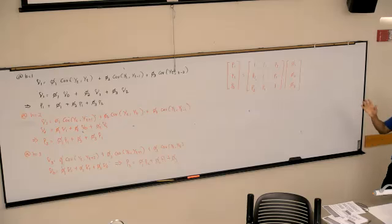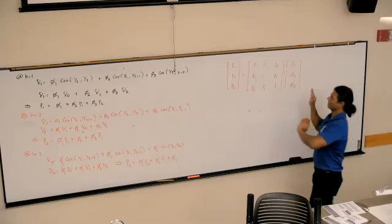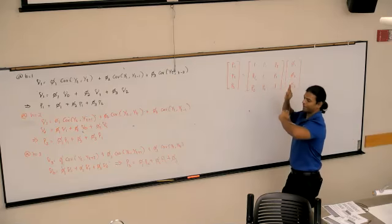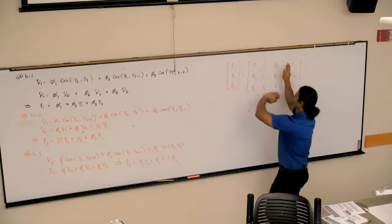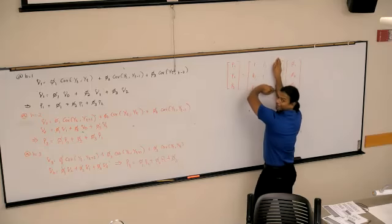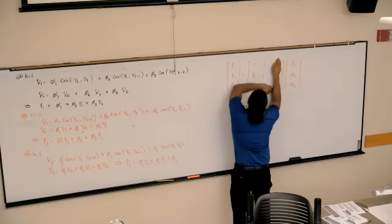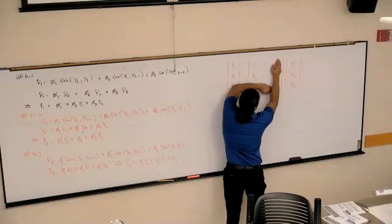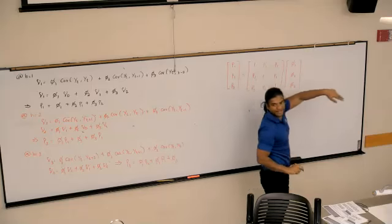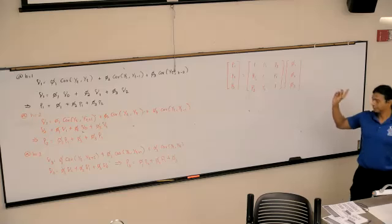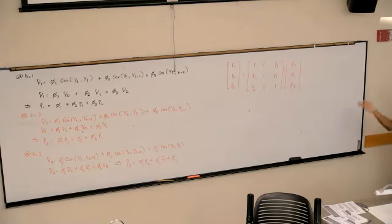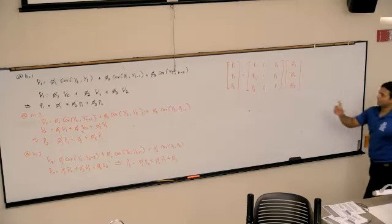And you should sort of see a pattern here. If we had an AR2, those two will go away. Right? And if you look at the matrix that we have in there, that will match up to what we had. One rho 1, rho 1, 1.